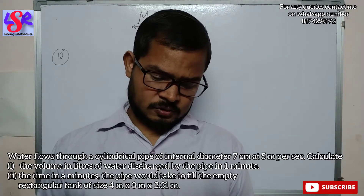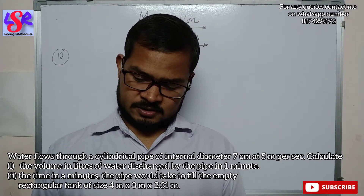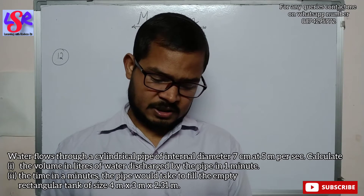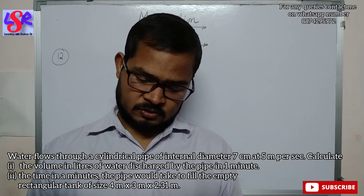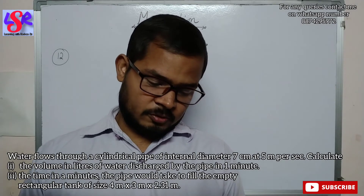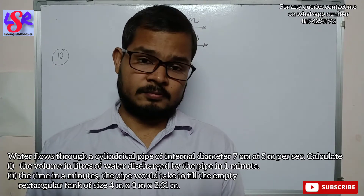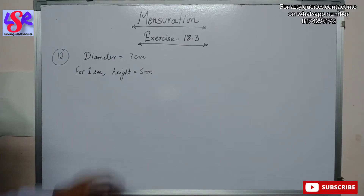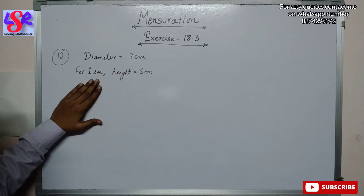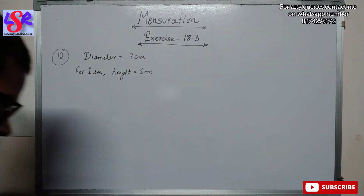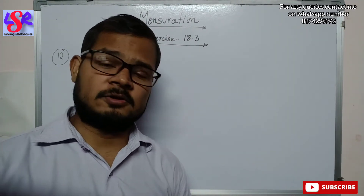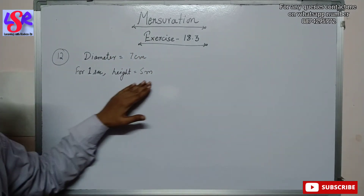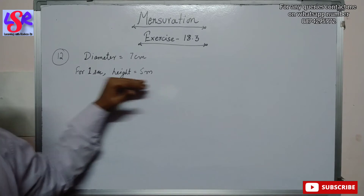In question 12, water flows through a cylindrical pipe of internal diameter 7 cm at 5 metres per second. We need to calculate the volume of water discharged in 1 minute and the time to fill a tank of size 4 m × 3 m × 2.31 m. The water flowing at 5 metres per second acts as the height per second, so h = 5 m.